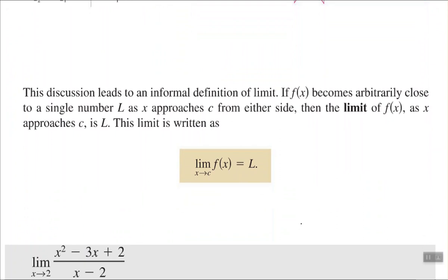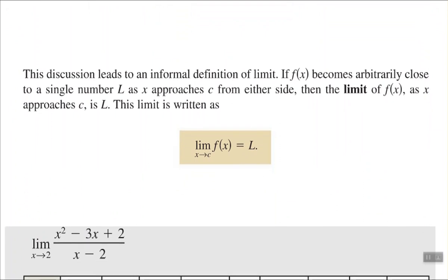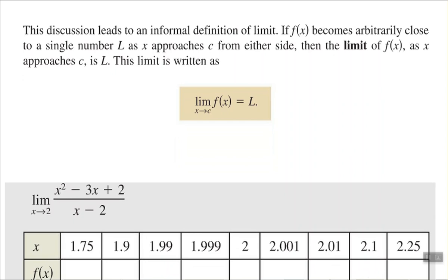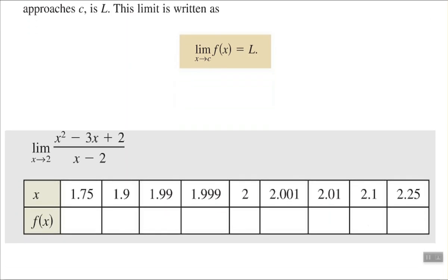This is an informal definition of the limit: as f of x becomes arbitrarily close to a single number L as x approaches C from either side, then the limit of f of x as x approaches C is capital L. It's written as: the limit of the function f of x as x arrow C equals the limit L.